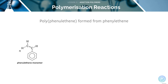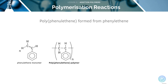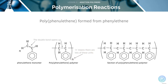Here we can see a reaction where phenyl ethene is forming a polymer. This is the repeating unit or monomer. Since the double bond has opened up, the small n shows that there are many repeating units. This is a section of the polymer that is formed.